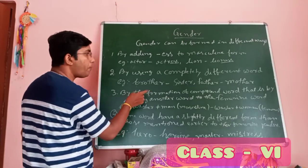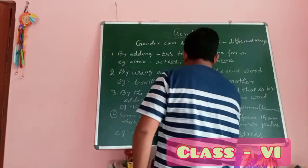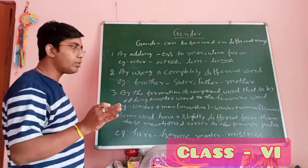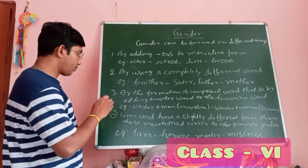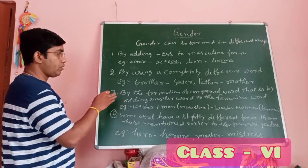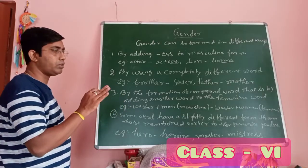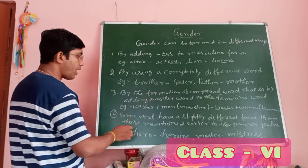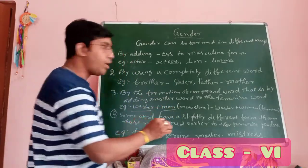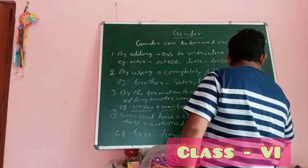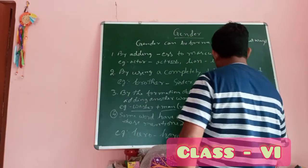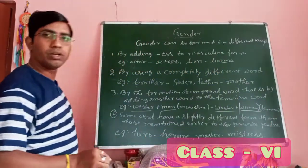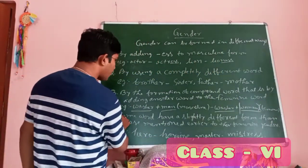Rule three: by the formation of a compound word — adding another word to form the feminine. For example, 'washerman' is masculine; you keep 'washer' the same and add 'woman' to make 'washerwoman', which is feminine. You add only to the feminine word.